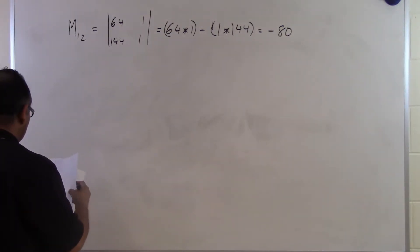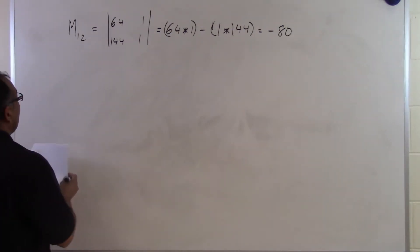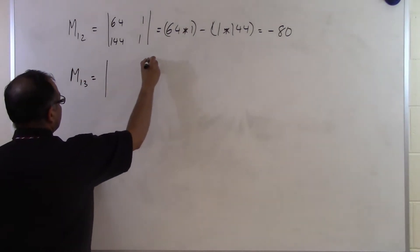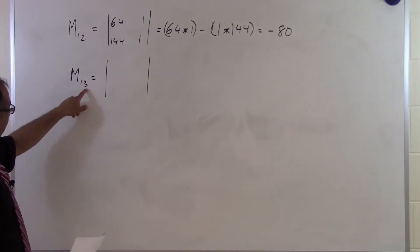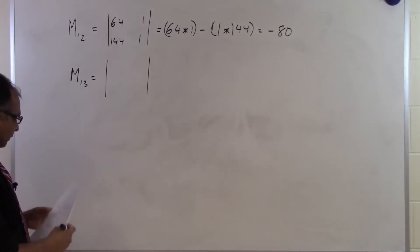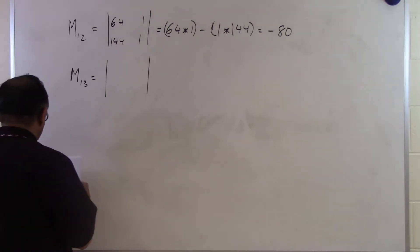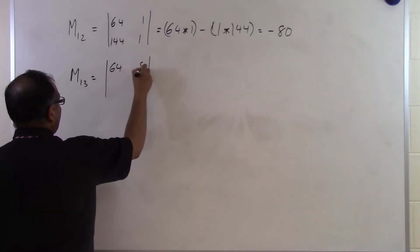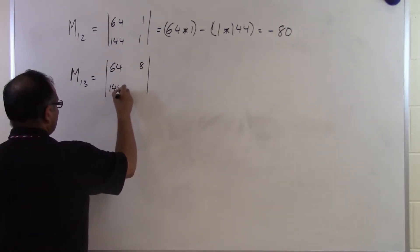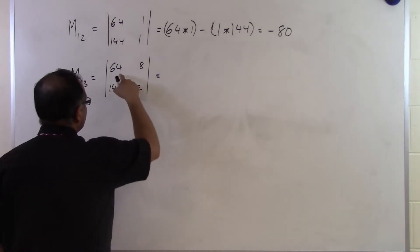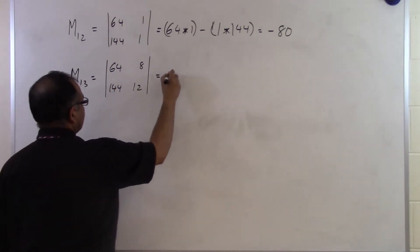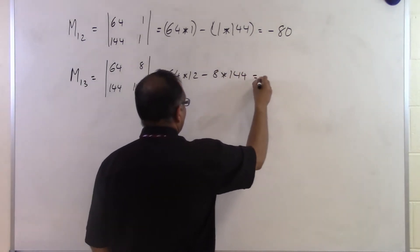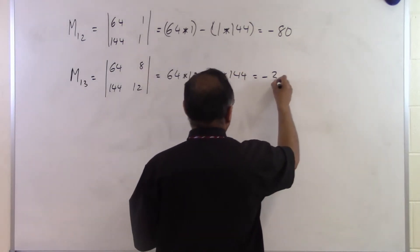For M13, I take out the first row and the third column, leaving 64, 8 and 144, 12. That gives 64 times 12 minus 8 times 144, which equals minus 384. So M13 equals minus 384.